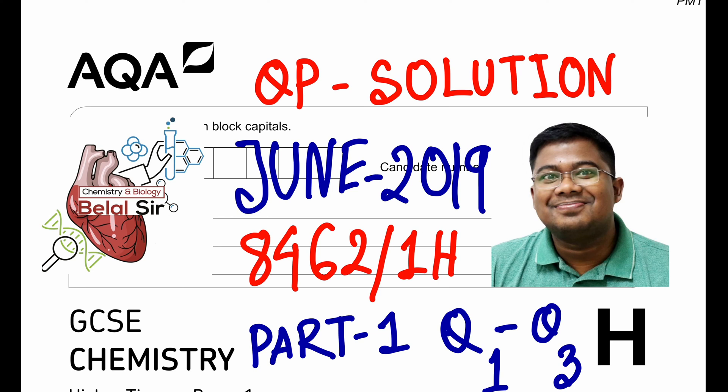Hello everyone. Today we are going to be solving AQA GCSE chemistry higher tier paper 1. In this video we are solving June 2019 and this is the part 1 video where we are solving from question number 1 to question number 3.